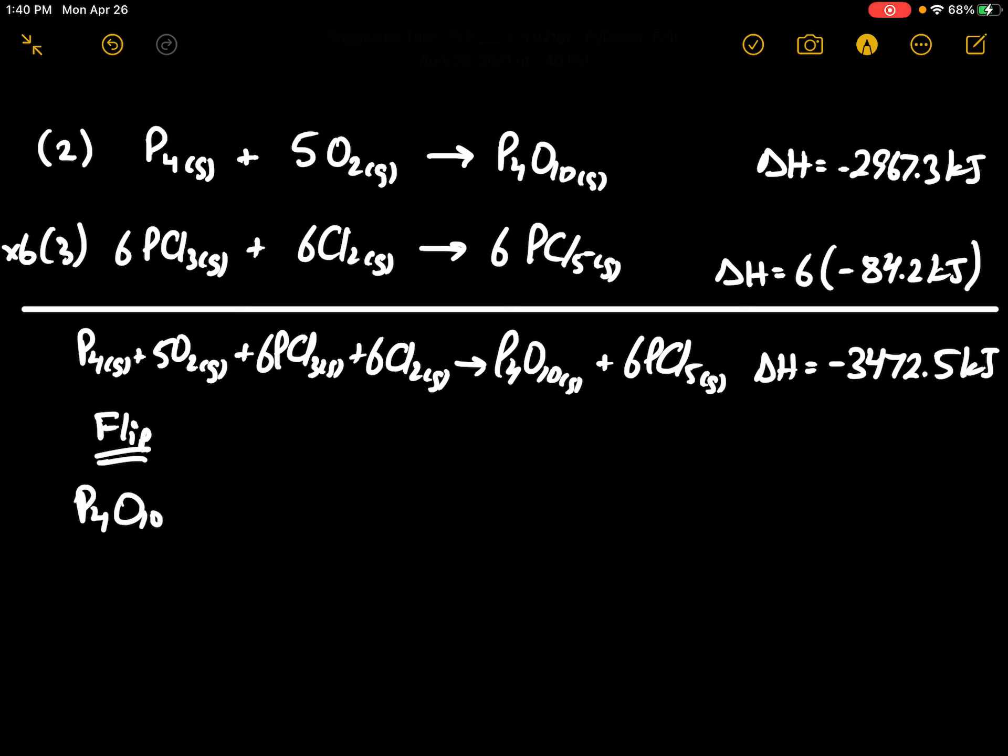This would give me P4O10 solid, 6PCl5 gas, P4 solid, 5O2 gas, 6PCl3, and 6Cl2. Delta H here is positive 3,472.5 kilojoules.